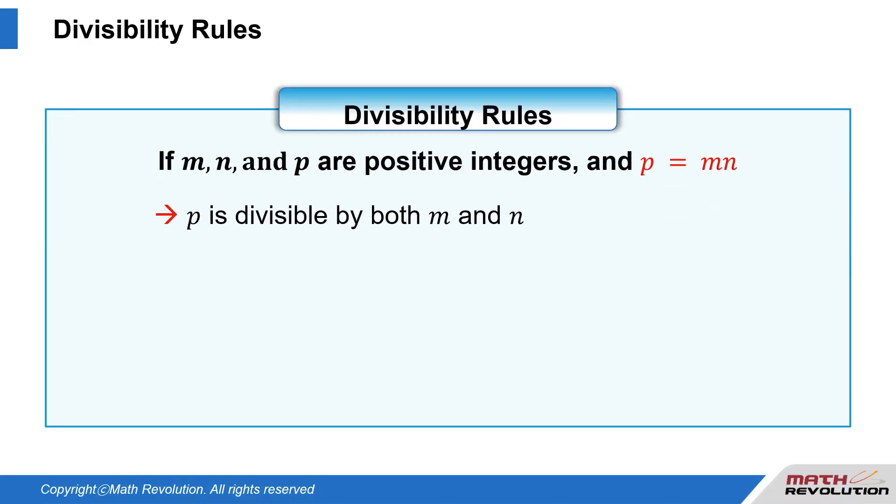If m, n, and p are positive integers, and p equals m times n, then p is divisible by both m and n.